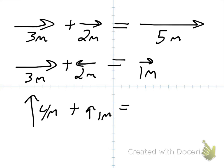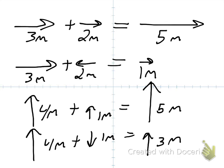Do the same thing with up and down. So 4 meters north plus 1 meter north, add them up, and you get 5 meters north. So hopefully that was pretty easy, so now let's try something a little bit more complicated.